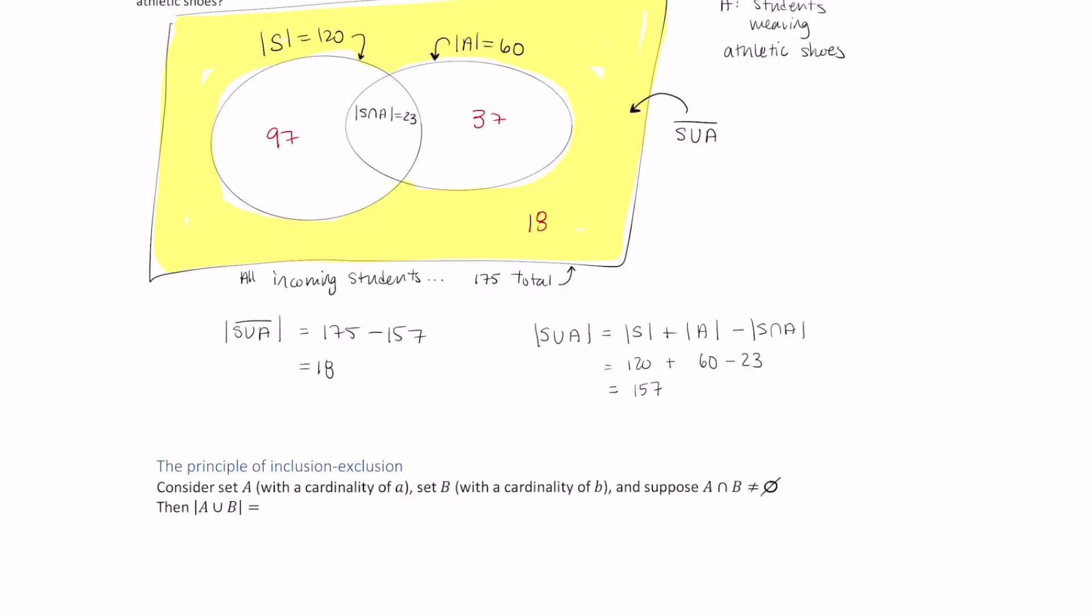All right, turn to the next page, the principle of inclusion-exclusion. Consider the set A and the set B. Suppose their intersection is not empty, then the cardinality of the union is equal to the cardinality of A plus the cardinality of B minus the cardinality of the intersection of both sets. If we're going to use little A and little B as we're given, then we would write A union B, and its cardinality is equal to little A plus little B minus the intersection of A and B.